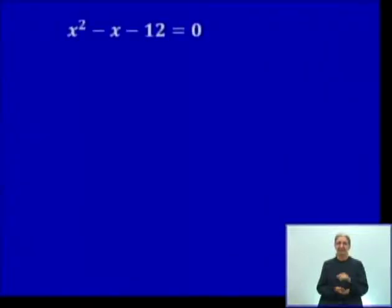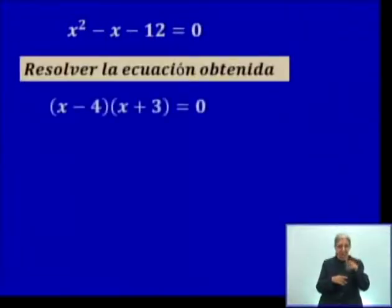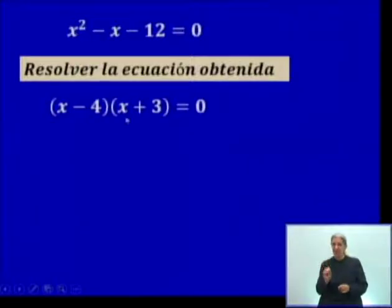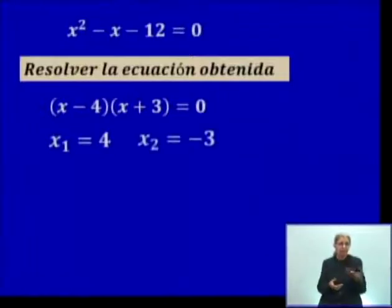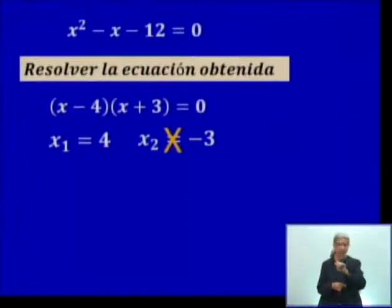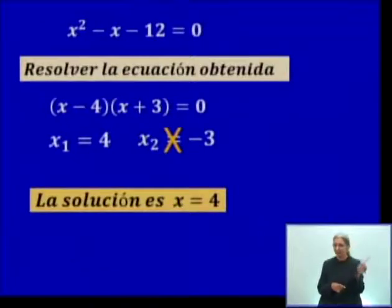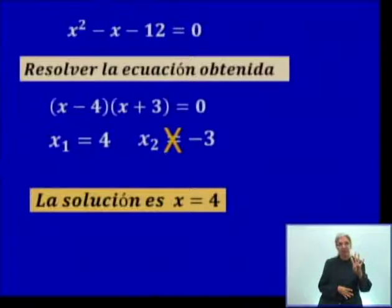Vamos a resolver la ecuación de segundo grado que nos generó esa multiplicación. Está factorizado. Esta expresión es igual a cero cuando X es igual a 4 o cuando X es igual a menos 3. Ahora, recuerden el dominio: la X no puede tomar el valor menos 3. Por tanto, la única solución de ese ejercicio es 4.